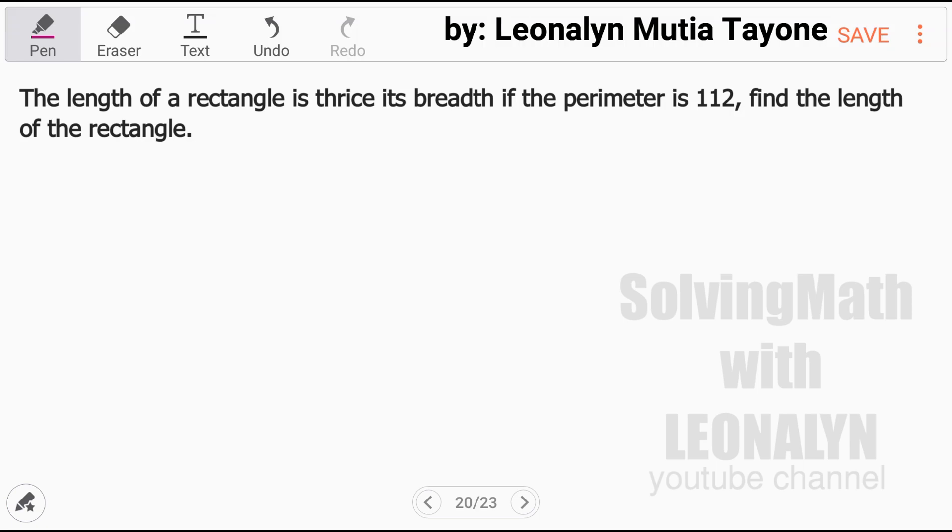Let's read the problem. The length of a rectangle is thrice its breadth. Breadth is another way of saying width. If the perimeter is 112, find the length of the rectangle.